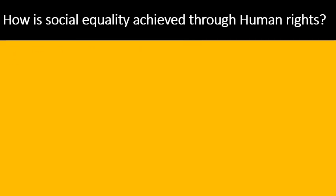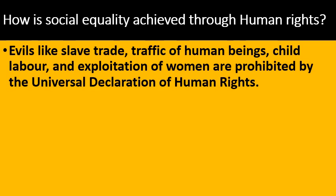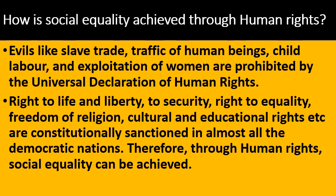How is social equality achieved through human rights? Evils like slave trade, exploitation of human beings, child labor and exploitation of women are prohibited by the universal declaration of human rights. Right to life and liberty, right to security, right to equality, freedom of religion, cultural and educational rights, etc., are constitutionally sanctioned in almost all democratic nations. Therefore, through human rights, social equality can be achieved.